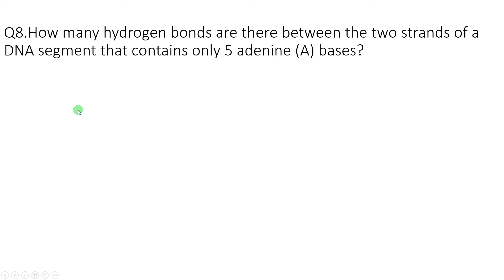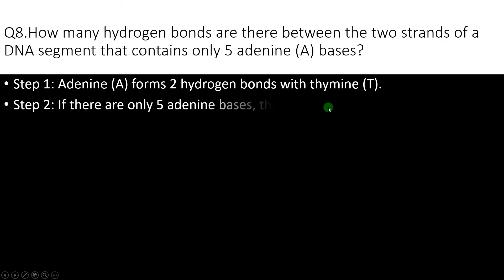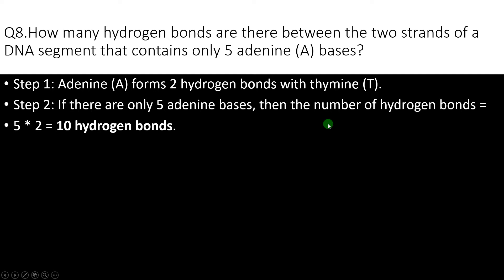Question number 8: how many hydrogen bonds are there between the two strands of a DNA segment that contains only 5 adenine residues? As we know, adenine forms two hydrogen bonds with thymine. If there are only 5 adenine bases then the number of hydrogen bonds is 5 into 2, that is 10 hydrogen bonds.